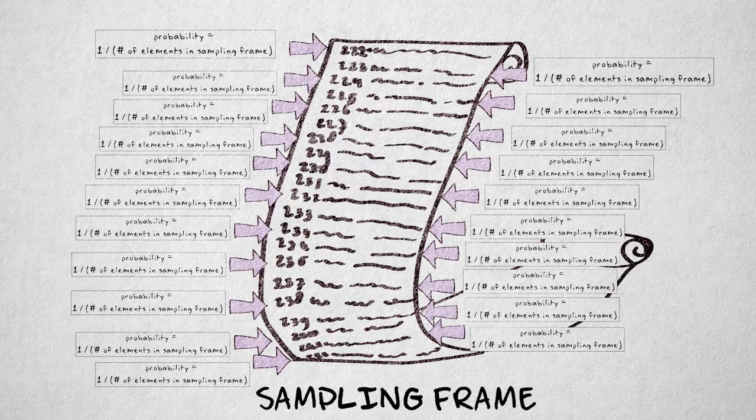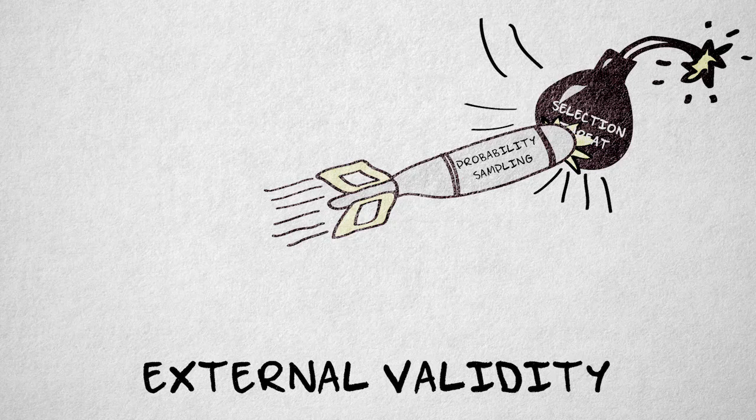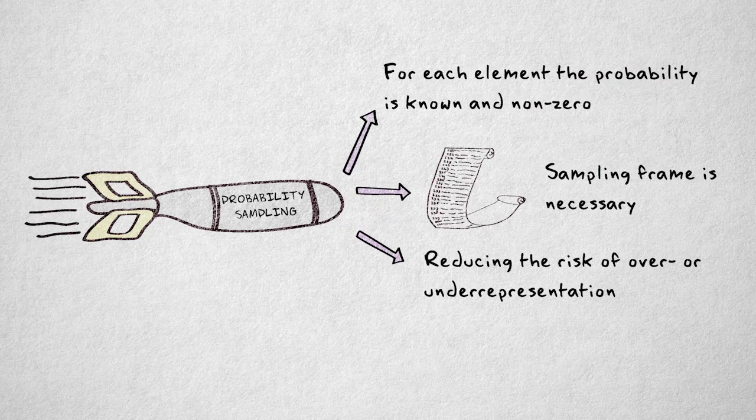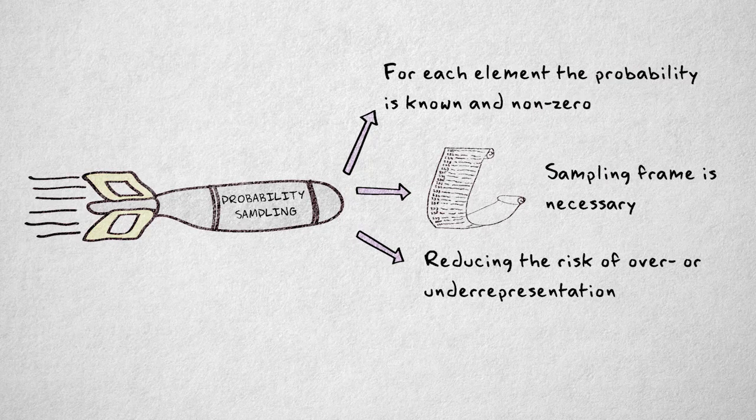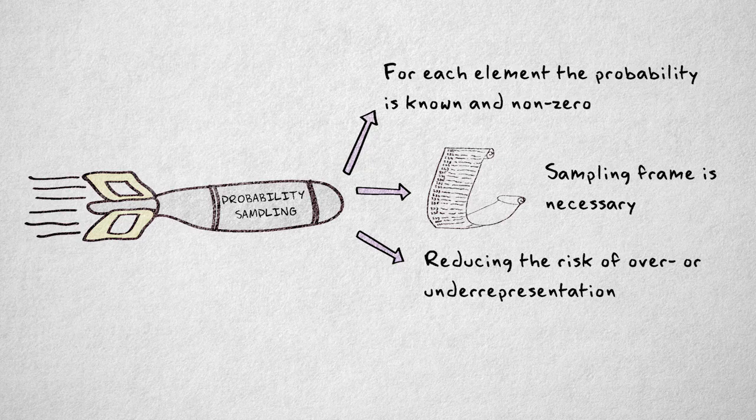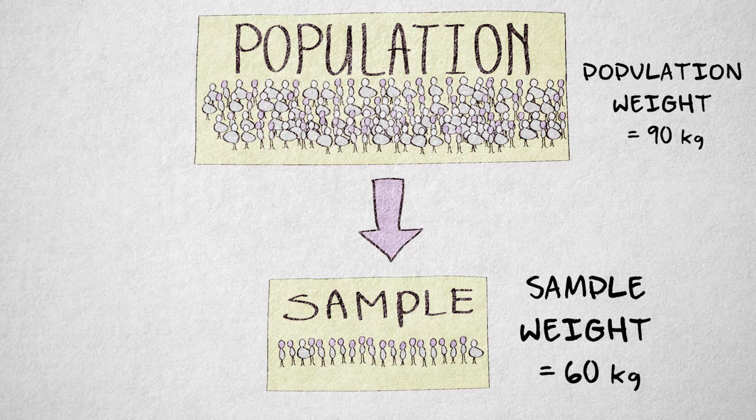Now let's see why probability sampling minimizes the threat of systematic bias in our selection of participants. Reducing systematic bias means reducing the risk of over or under-representation of any population subgroup with a systematically higher or lower value on the property. Otherwise, our sample value will be unlikely to represent the population value accurately.